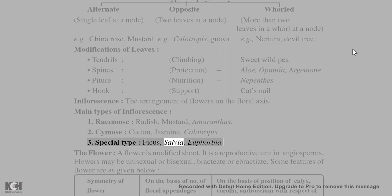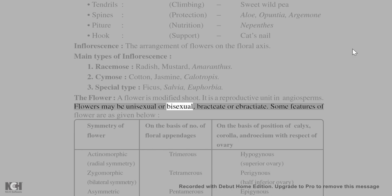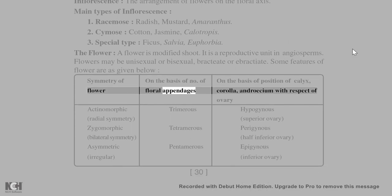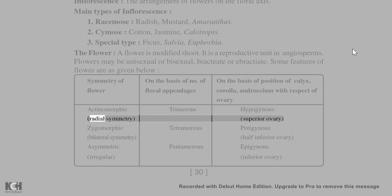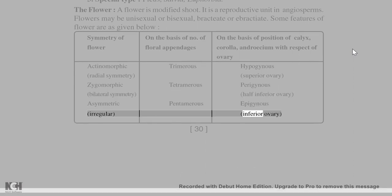The flower is a modified shoot; it is a reproductive unit in angiosperms. Flowers may be unisexual or bisexual, bracteate or ebracteate. Features of a flower — symmetry: actinomorphic (radial symmetry), zygomorphic (bilateral symmetry), asymmetric (irregular). Based on number of floral appendages: trimerous, tetramerous, pentamerous. Based on position of calyx, corolla, and androecium with respect to the ovary: hypogynous (superior ovary), perigynous (half inferior ovary), epigynous (inferior ovary).